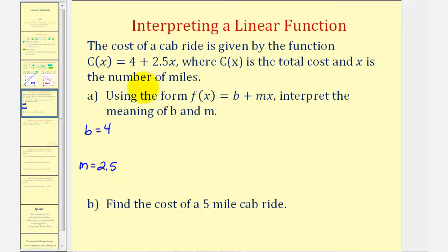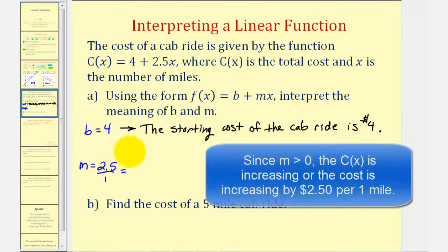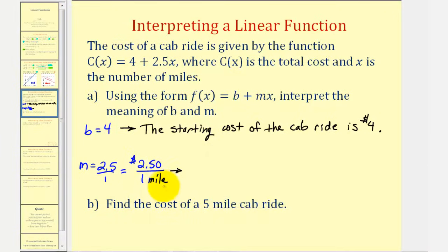Remember, b is the function value when x equals zero, which is the starting or initial amount. This means as soon as we get into the cab, even when we've driven zero miles, the cost is still four dollars — so the starting cost of the cab ride is four dollars, often called the flag fee. To interpret the slope, we write it as a ratio: 2.5 over 1. Since slope is the change in y over the change in x, and the function value is cost, 2.5 represents a change of $2.50 per one mile — so the slope tells us the cost per mile.